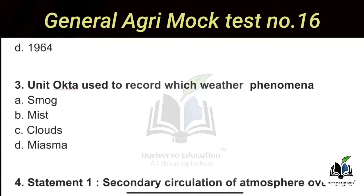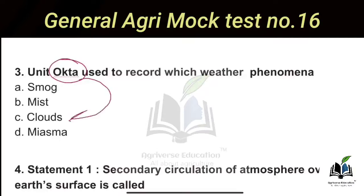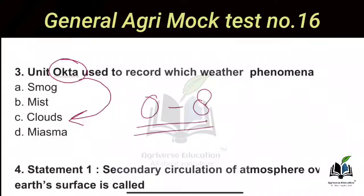Moving to the next question: The unit Okta is used to record which weather phenomenon? Options include rainfall, sun radiation, and clouds. The unit Okta is used to measure clouds. Its value varies from 0 to 8. Remember that Okta's value varies from 0 to 8.